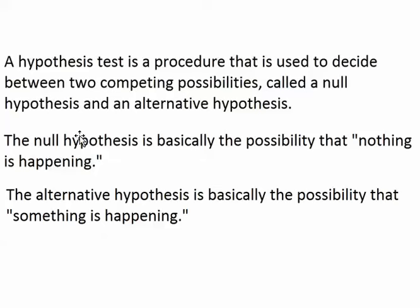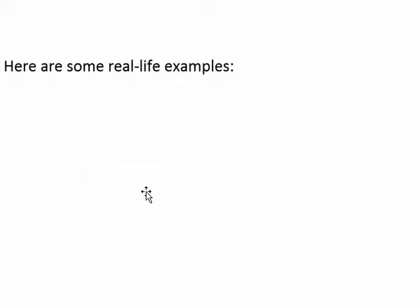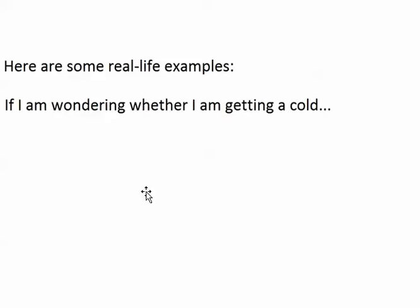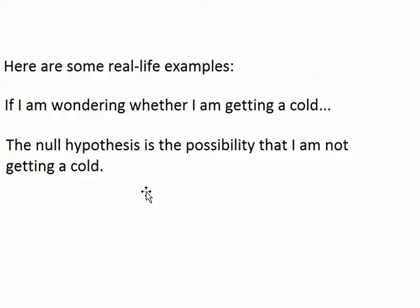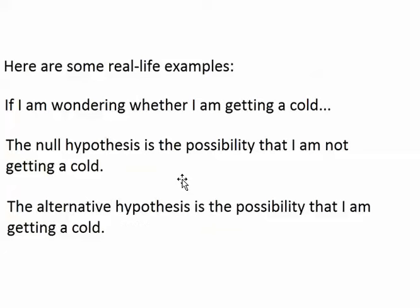The null hypothesis is the possibility of the absence of something, and the alternative hypothesis is the possibility of the presence or existence of something. Here are some real-life examples. If I'm wondering whether I get a cold, the null hypothesis would say that I'm not getting a cold, because this is the possibility that nothing is happening. The alternative hypothesis would say that I am getting a cold, because that is the possibility that something is happening.